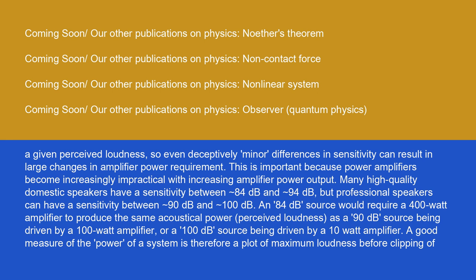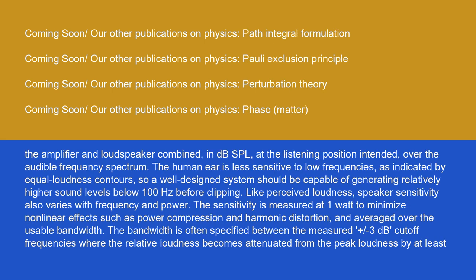A good measure of the power of a system is therefore a plot of maximum loudness before clipping of the amplifier and loudspeaker combined in dB SPL at the listening position intended over the audible frequency spectrum. The human ear is less sensitive to low frequencies, as indicated by equal loudness contours.